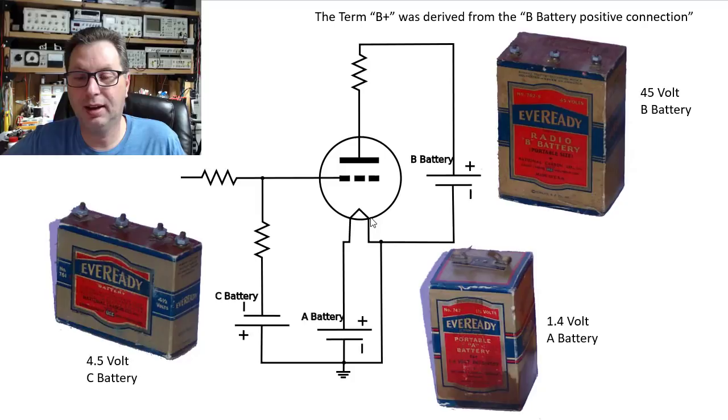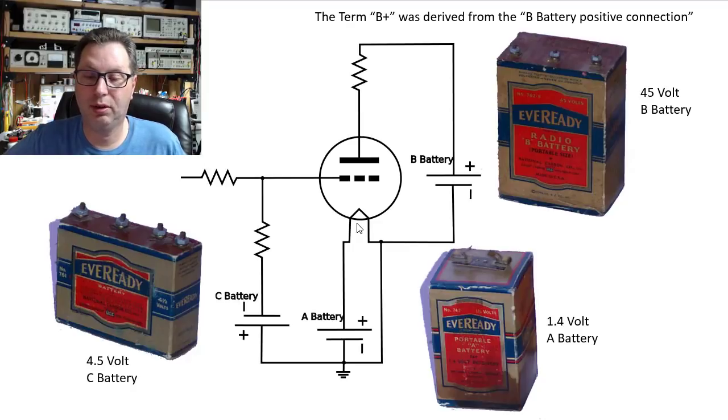So what you would do is you would connect this B battery between your cathode and your plate here, your anode, and you would put the positive here of this B battery on the plate. You would then connect up an A battery of 1.4 volts between ground and your cathode here to slightly bias it. And then you would connect your C battery of 4.5 volts, you would connect it kind of reverse polarity. So you connect the positive to ground and the negative up here to the grid, which would create that negative voltage on the grid that slows down the flow of electrons we talked about earlier.